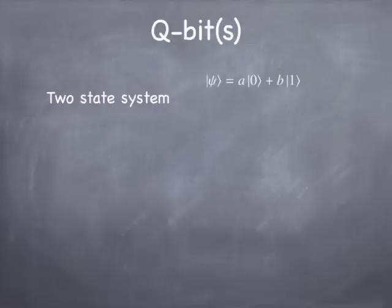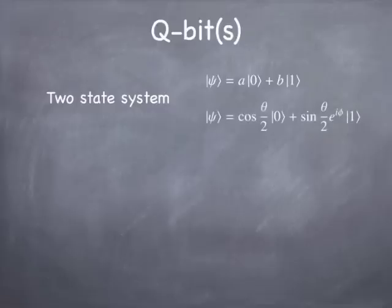A two-state system is a system that has two quantum states and, in general, exists in some kind of a superposition state with amplitudes A and B for the two states. A and B are not without restrictions: the sum of the squared magnitudes of A and B has to equal one. Also, an overall phase doesn't matter, so you can rewrite the state in terms of two real numbers, theta and phi — the same two real numbers that specify the direction of a spin-1/2 particle. So a spin-1/2 particle is a canonical model of a two-state system.